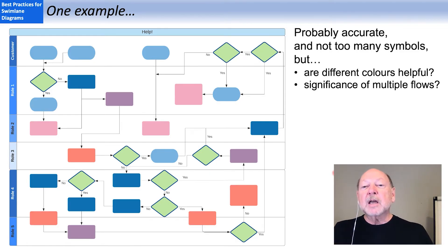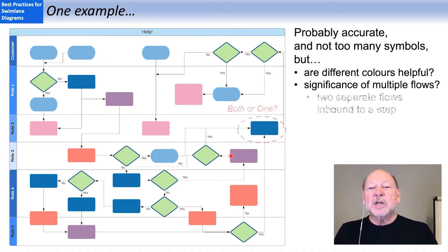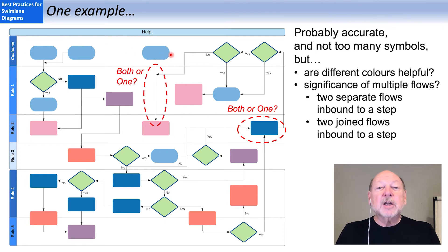More concerning were points where there was multiple flows associated with a step. So right here, I don't know, do we need both of these flows to trigger this step or only one of them? Similarly over here, where one flow joins another, does that mean they both end up at this lower step or just one of them?